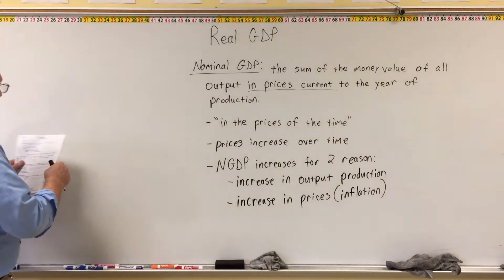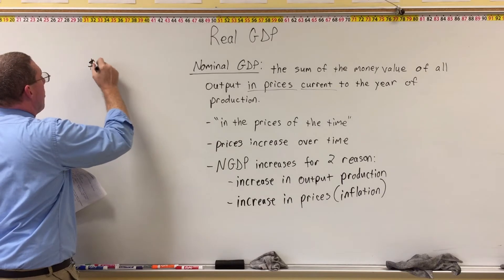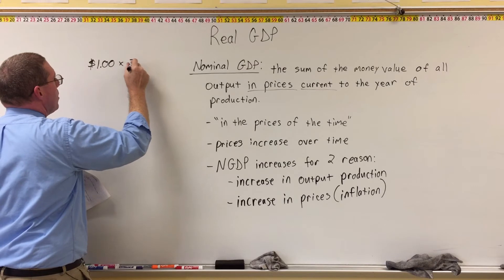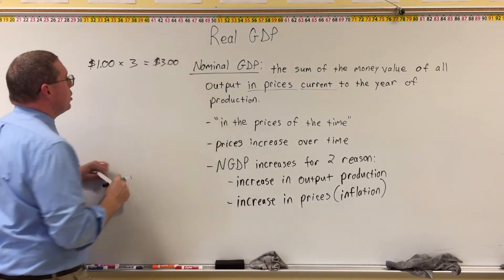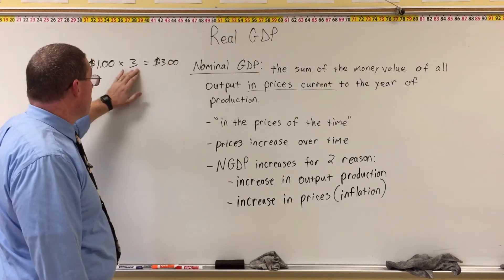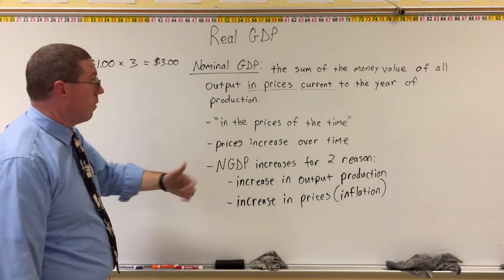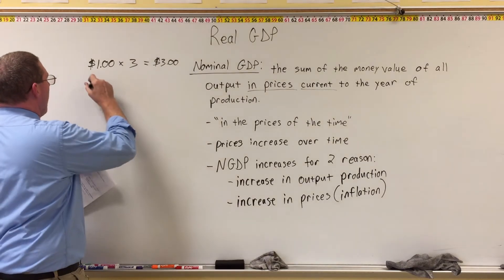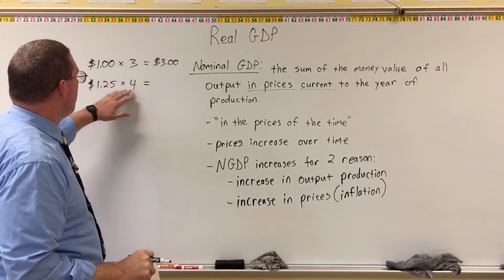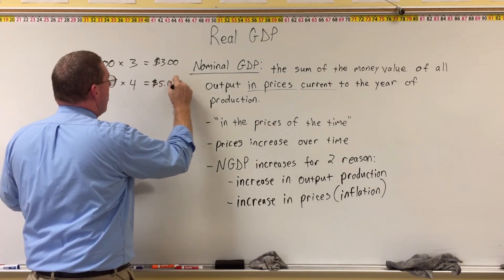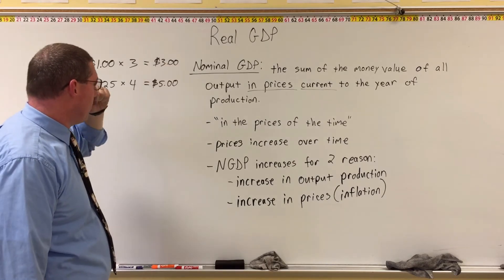Let me give you a little example. Let's say that in a very, very tiny economy, candy bars are $1 and we produce three candy bars in one year. Three candy bars times $1 is $3. So nominal GDP for that year is $3. Now let's say the next year the price of a candy bar goes up to $1.25, and we produce and sell four candy bars. Four candy bars times $1.25 is $5. Nominal GDP has gone up by $2 — nominal GDP in one year is $3, the next year it's $5.